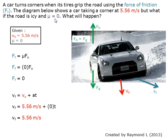But if the coefficient of friction equals zero, then the force of friction will also be zero. The force of friction equals the coefficient of friction multiplied by the normal force. Since the coefficient of friction equals zero, the force of friction will also be zero.